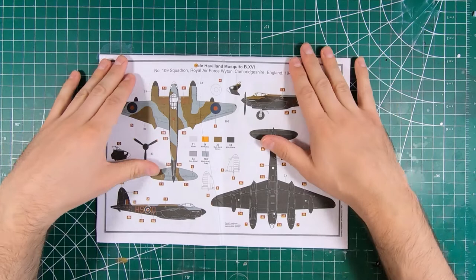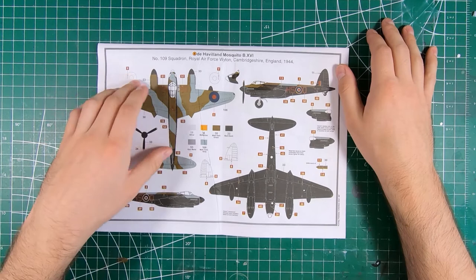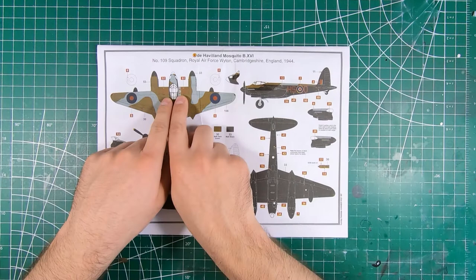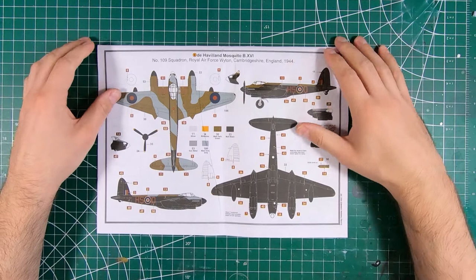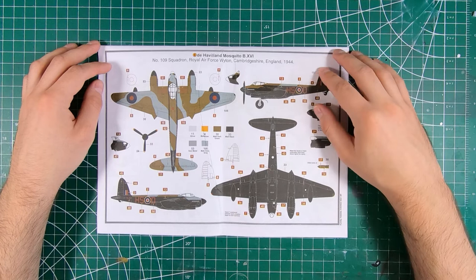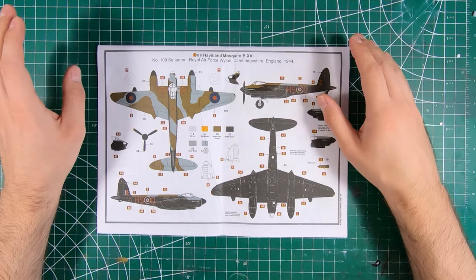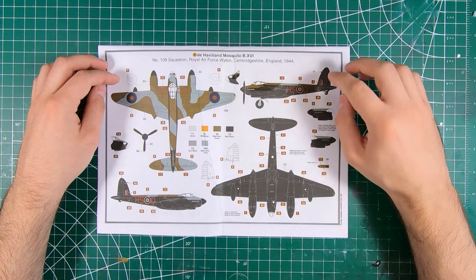And 109 Squadron, also in 44. Black with the ocean gray and dark green upper surfaces. And these ones we do have that big red no step X marking. Slightly unusual seeing a black bomber mosquito. Typically you only saw the early night fighters painted overall black. You didn't see it on the bombers too often. So that's kind of a nice change of pace.